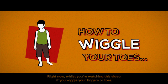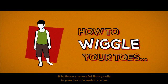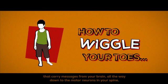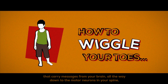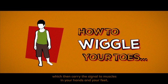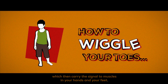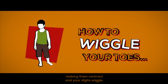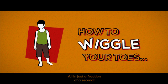Right now, whilst you're watching this video, if you wiggle your fingers or toes, it is these successful Betsy cells in your brain's motor cortex that carry messages from your brain all the way down to the motor neurons in your spine, which then carry the signal to muscles in your hands and your feet, making them contract and your digits wiggle, all in just a fraction of a second.